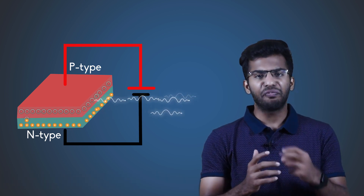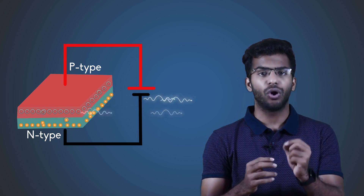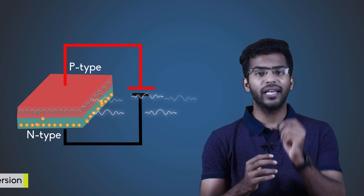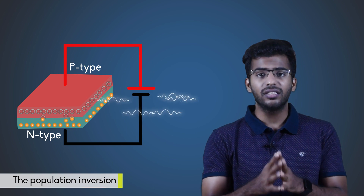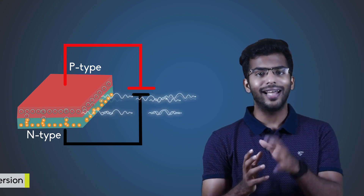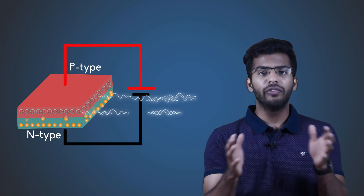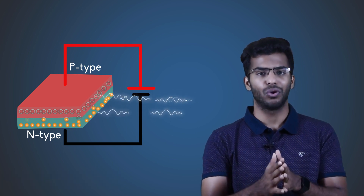If we increase the forward voltage, we reach the stage of population inversion. At this stage, more number of holes and electrons will recombine and release photons.